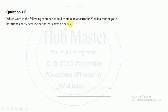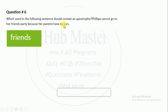Which word in the following sentence should contain an apostrophe? 'Phila cannot go to her friend's party because her parents have no cars.' The word with an apostrophe is 'friends' — written as 'friend's.' Apostrophes are punctuation marks. Friends have possession — 'friend's' — so we use a possessive apostrophe.